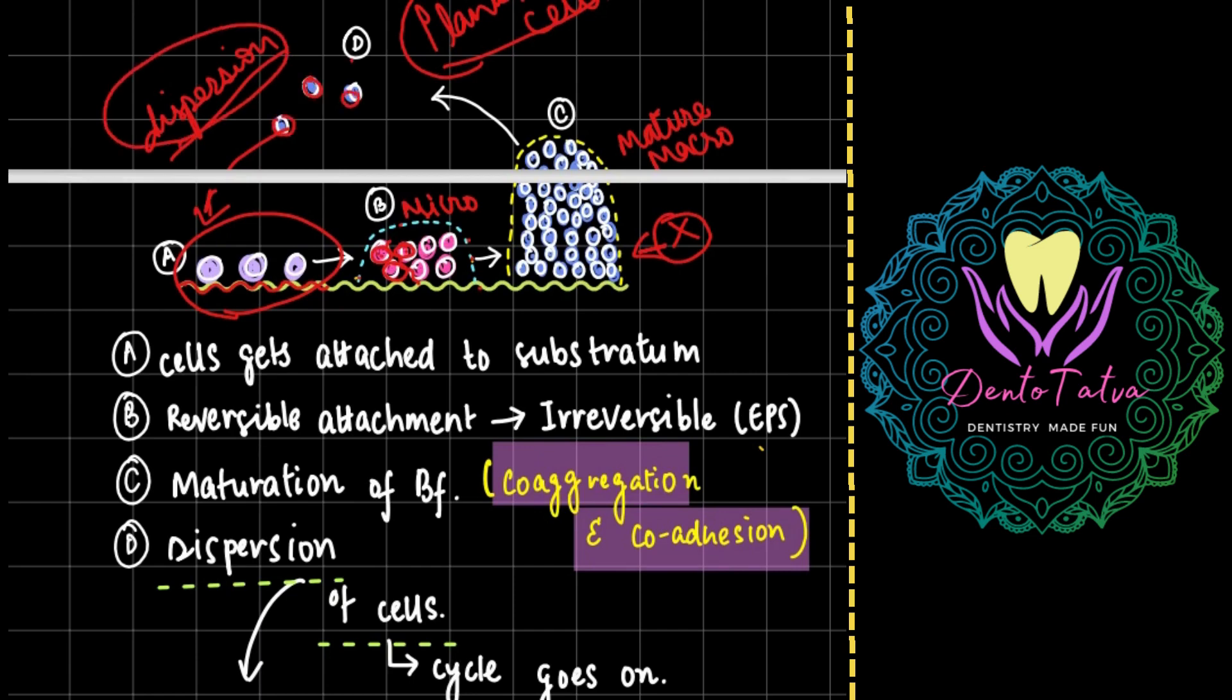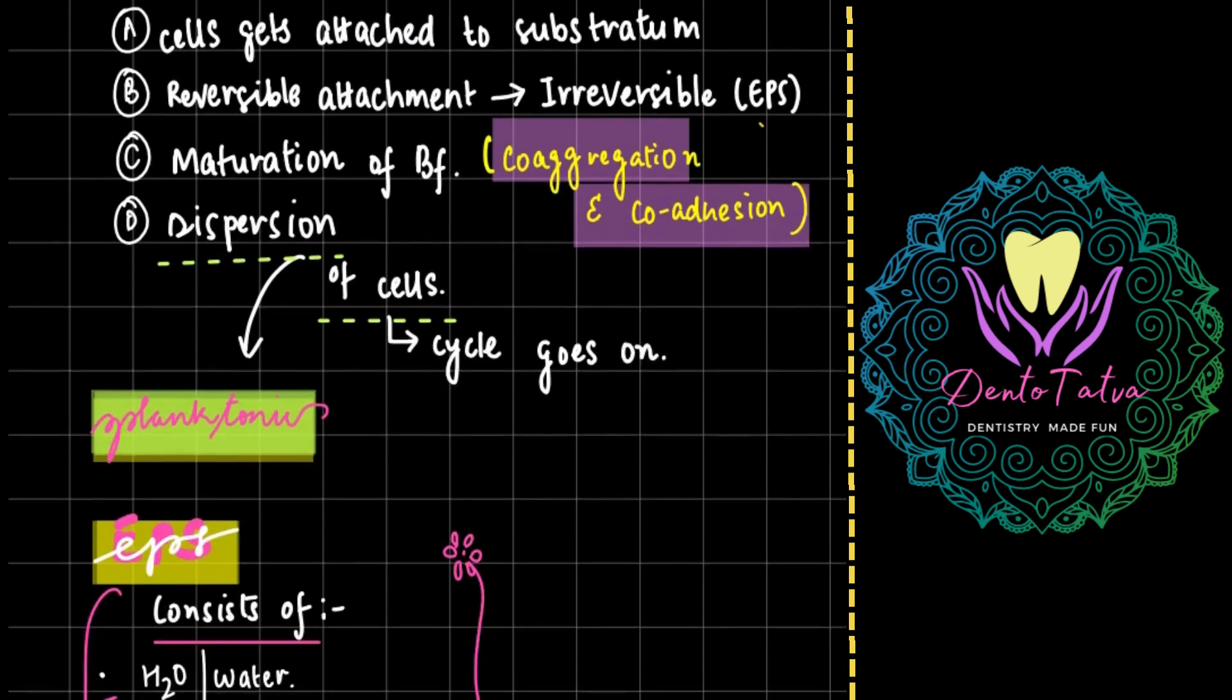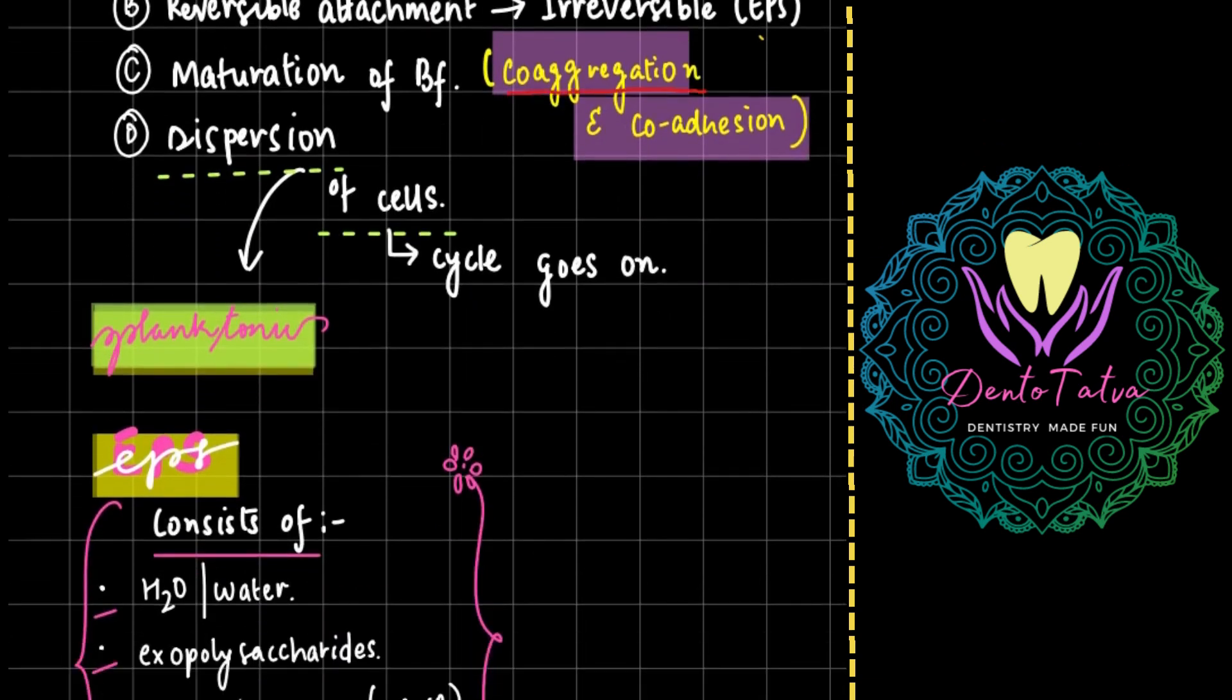Single cells are easier to kill by the host defense than killing an entire mature colony that is well protected. So there is a concept of coaggregation as well as coadhesion when there is maturation.